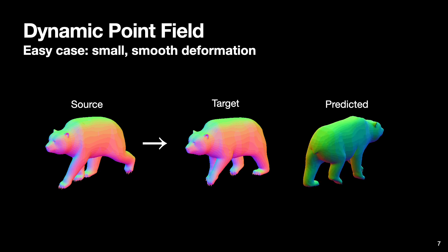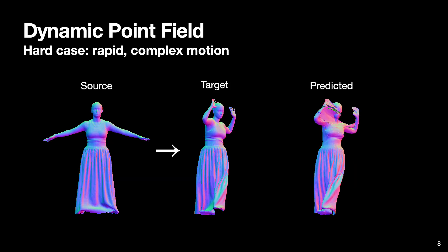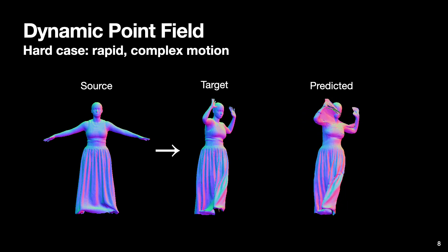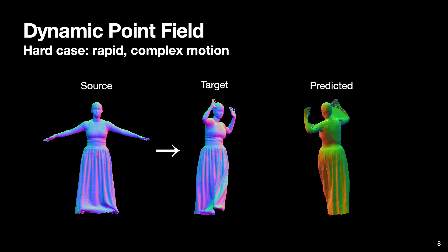While this formulation is directly applicable in the case of small and smooth deformation, it fails to find a plausible deformation field in the case of rapid and complex motion. To alleviate the problem we propose two techniques for learning plausible deformations.